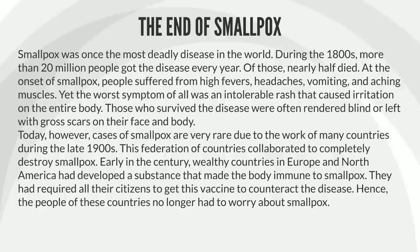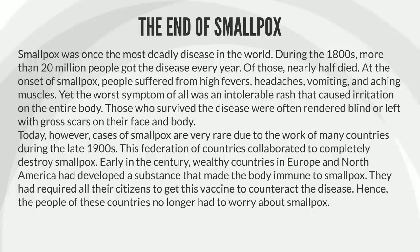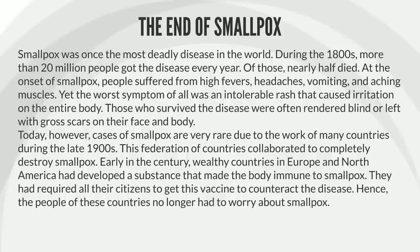Smallpox was once the most deadly disease in the world. During the 1800s, more than 20 million people got the disease every year. Of those, nearly half died. At the onset of smallpox, people suffered from high fevers, headaches, vomiting, and aching muscles. Yet the worst symptom of all was an intolerable rash that caused irritation on the entire body. Those who survived the disease were often rendered blind or left with gross scars on their face and body. Today, however, cases of smallpox are very rare due to the work of many countries during the late 1900s.